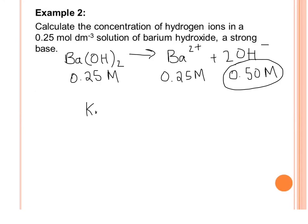We can use Kw equals H⁺ times OH⁻. We plug in what we know: Kw is 1.0 × 10⁻¹⁴. We don't know H⁺, but we do know OH⁻.